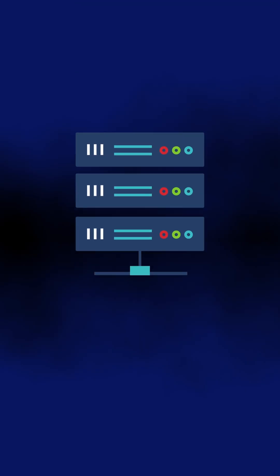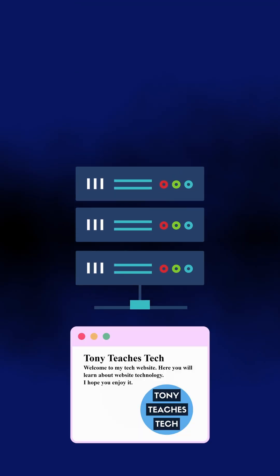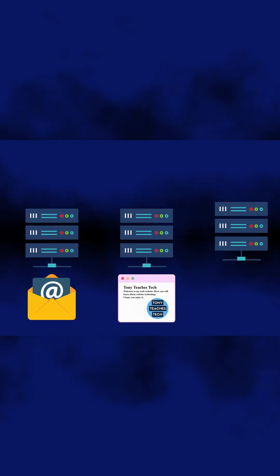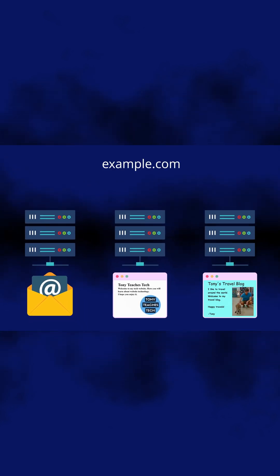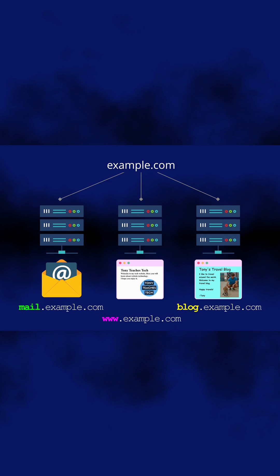Back in the early web days, it was common for a single server to be dedicated to hosting a website, a separate server to host email, and another one to host a blog. While these servers might share the same domain name, a subdomain was added to distinguish them. And that's really all WWW is — it's a subdomain.